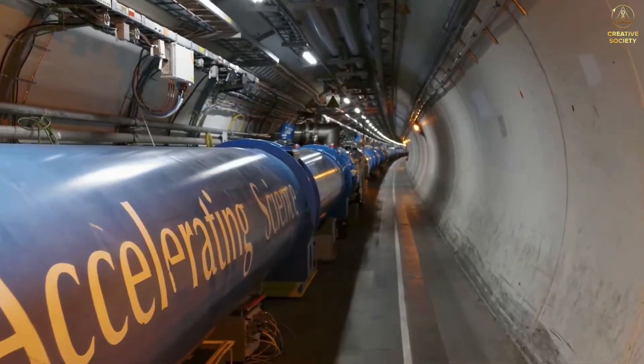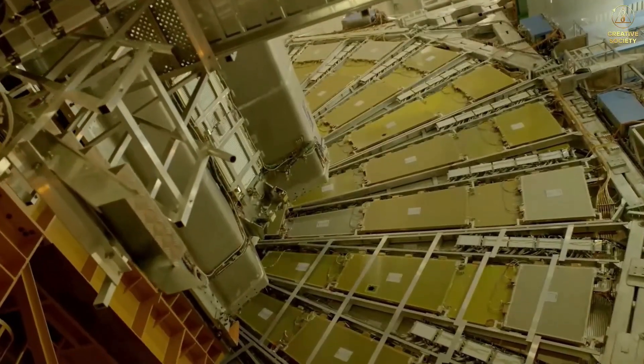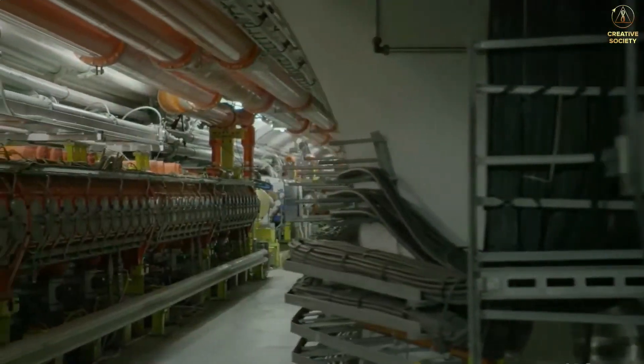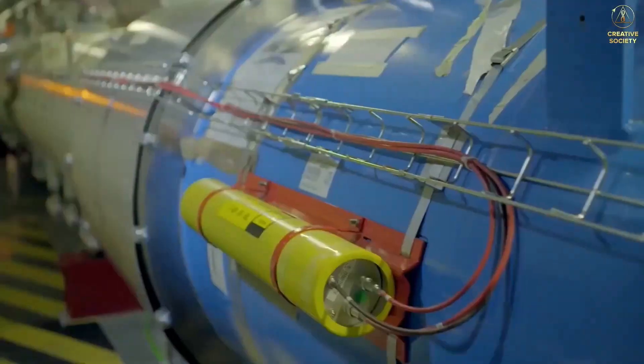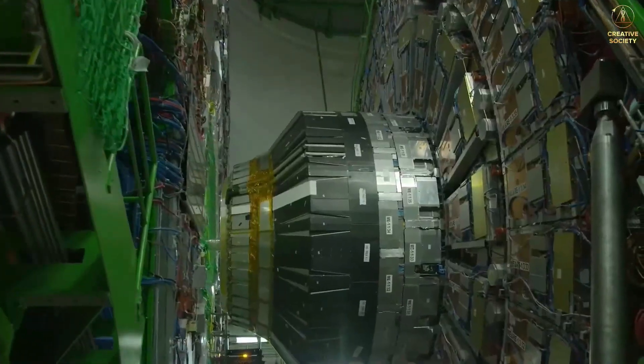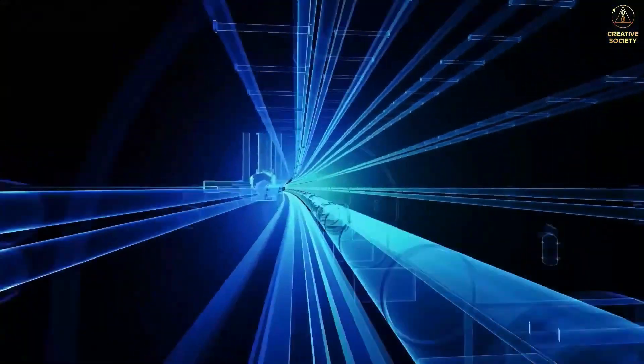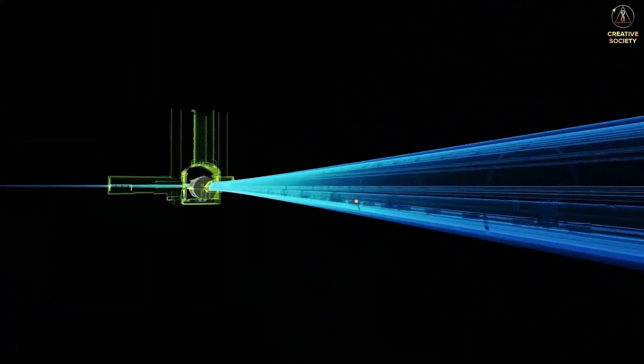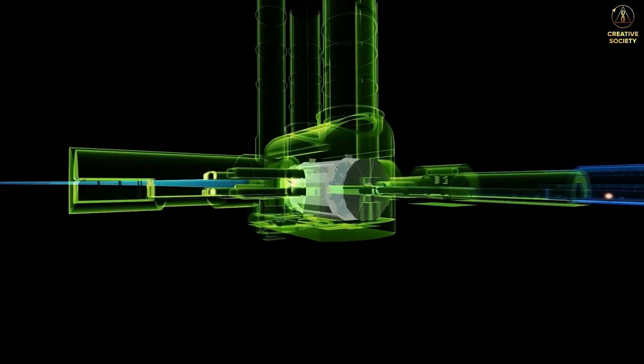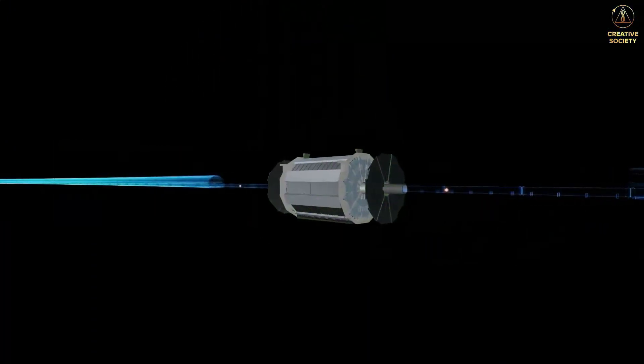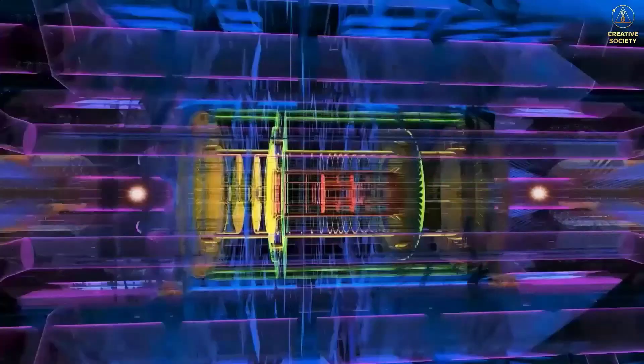As an example, let's take the Large Hadron Collider, the most powerful particle accelerator in the world. What happens there? In order to study the processes in the microworld, scientists use electromagnetic fields to accelerate two beams of charged particles such as protons at enormous speeds in the collider and then they collide them.